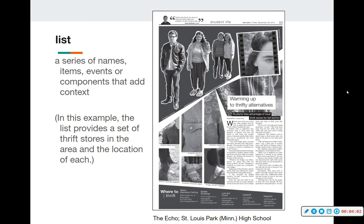A list is one of the ways you can include information on a page or spread in addition to your story. Here we have a newspaper story about thrifting, and at the bottom there's a list of where people can go to thrift. A list is a series of names, items, events, places, or other components that add context to your design. You could also expand upon it by adding a map. Here it says 'where to thrift' at the bottom.